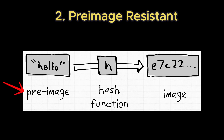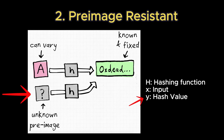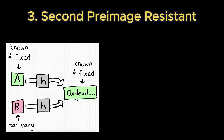Second, it is pre-image resistant — it is computationally infeasible to reverse a hash to obtain the original input, meaning that given a hash value y, it is computationally infeasible to find an x such that this equation holds. In other words, knowing the hash does not allow you to reconstruct or reverse-engineer the original input. Third, it is second pre-image resistant, meaning that even knowing one input and its hash, it's nearly impossible to find a different input that produces the same hash.